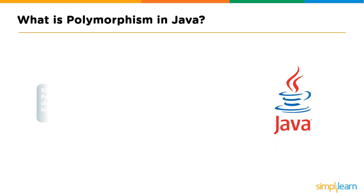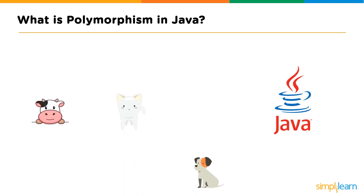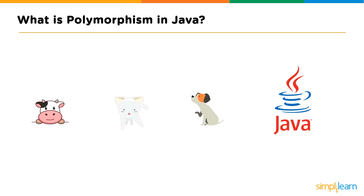What is polymorphism in Java? Similarly, in terms of the Java programming language, polymorphism is defined as the ability of any object in a class to perform a particular task in multiple methods. We're going to open up our Eclipse editor and do some animal sounds with cows, cats, and dogs — a fun, kids-like example of polymorphism.